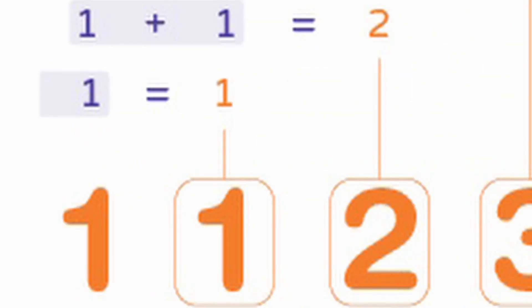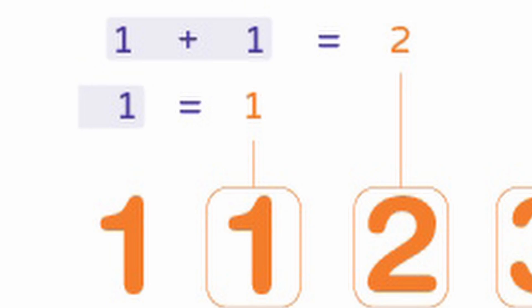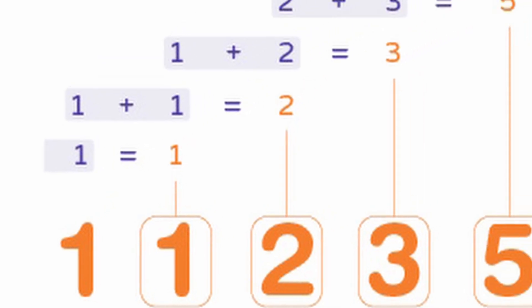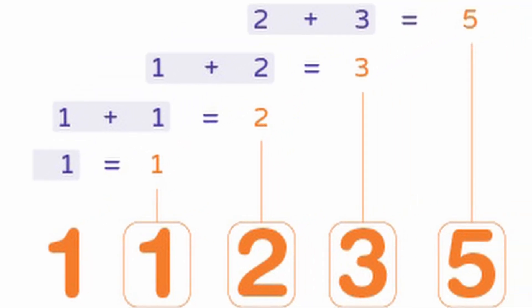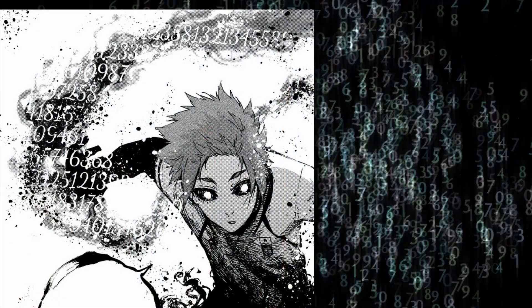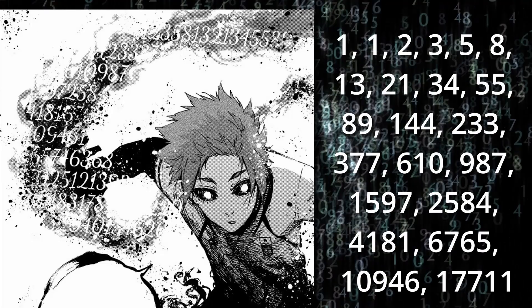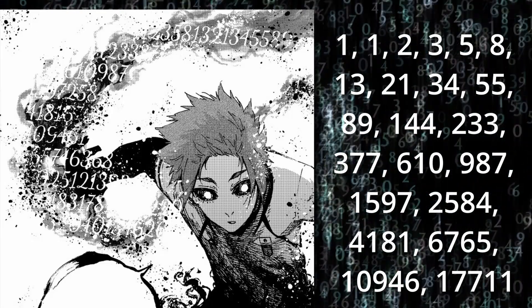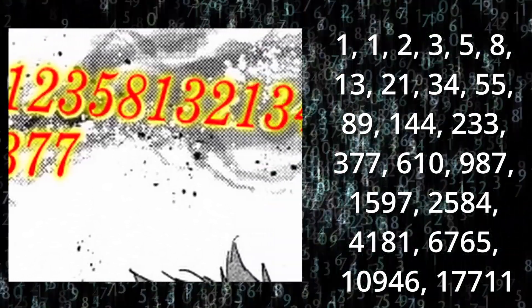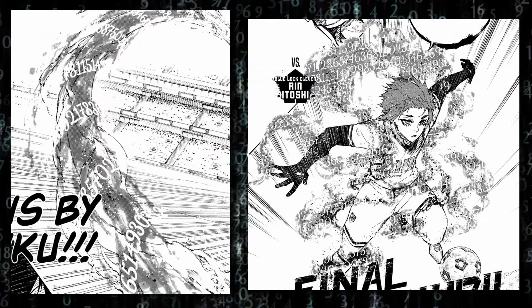You start with 1 and 1, then add them together to make 2. Next is 2 plus 1, making 3. Then 3 and 2 together equals 5. 5 and 3 makes 8, and so on. Just check it out — here's a shot of Sae with his numeric aura, and right there are the numbers of the Fibonacci sequence: 1, 1, 2, 3, 5, 8, 13, 21, 34, 55, etc. This is the sequence in every shot where Sae is shown with his unique aura, over and over again.